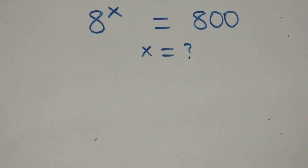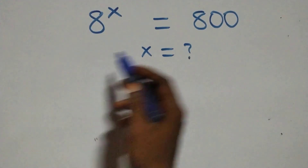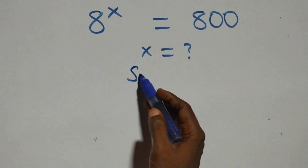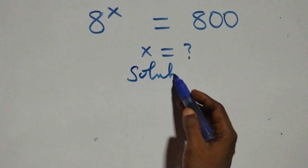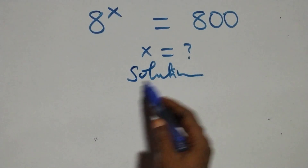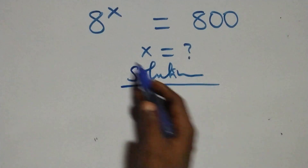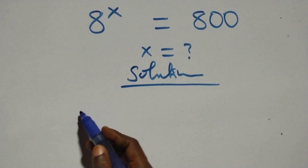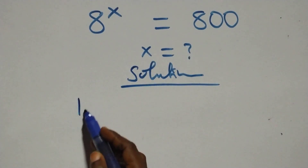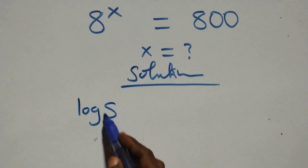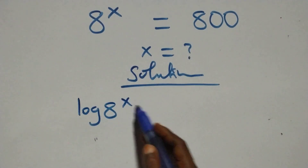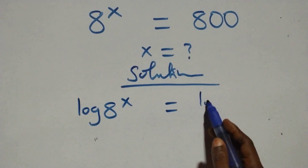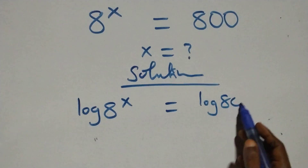Hello, you're welcome. How to solve this nice exponential equation. Here we have 8 raised to the power x equals 800. We take the log on both sides: log of 8 raised to power x equals log 800.